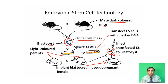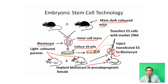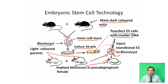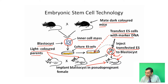Totipotent means these cells can be converted or transformed into any type of cell. These embryonic stem cells, isolated from the blastula, were cultured separately. Then these embryonic stem cells were transfected with marker DNA. After transfection, these transfected embryonic stem cells were injected inside the blastocysts of light-colored parents. These blastocysts are then implanted in the pseudo-pregnant female.